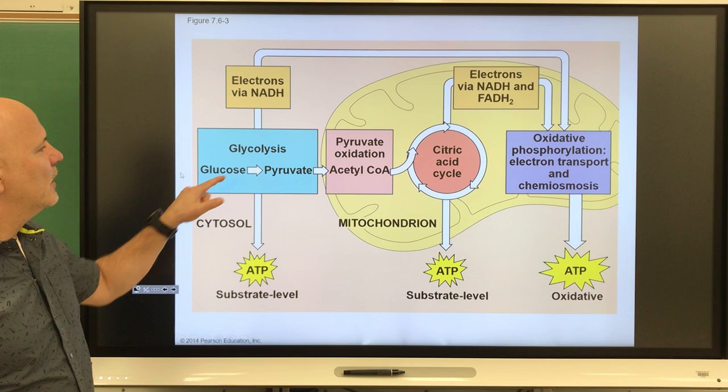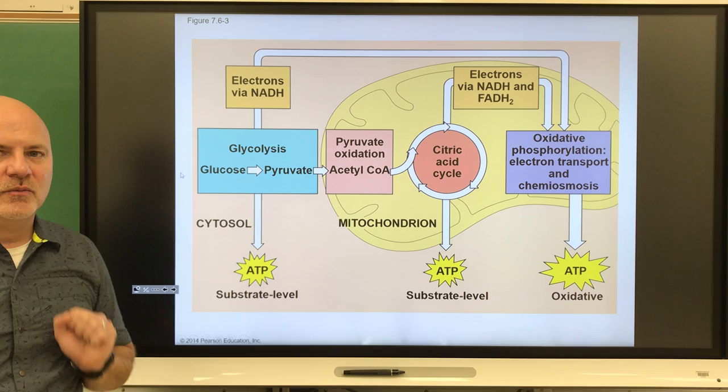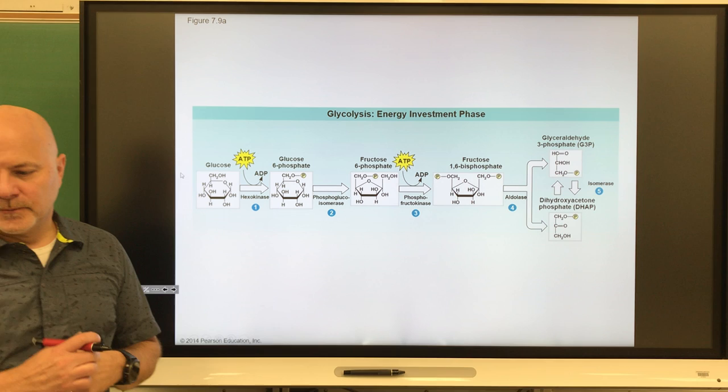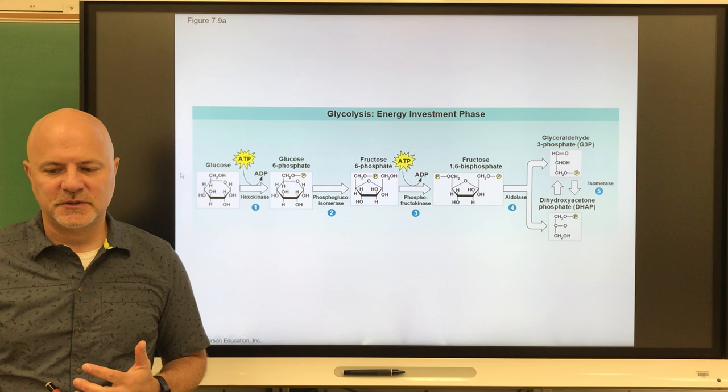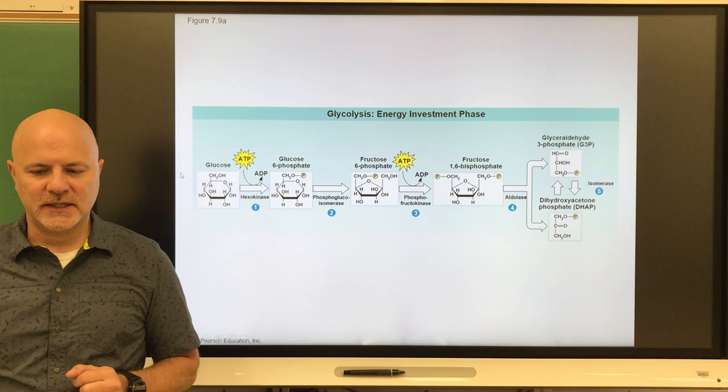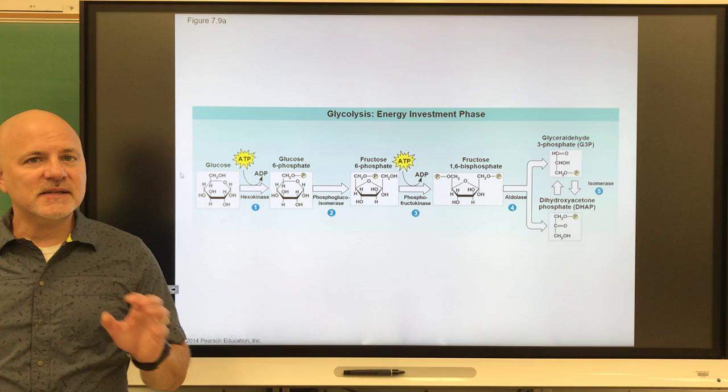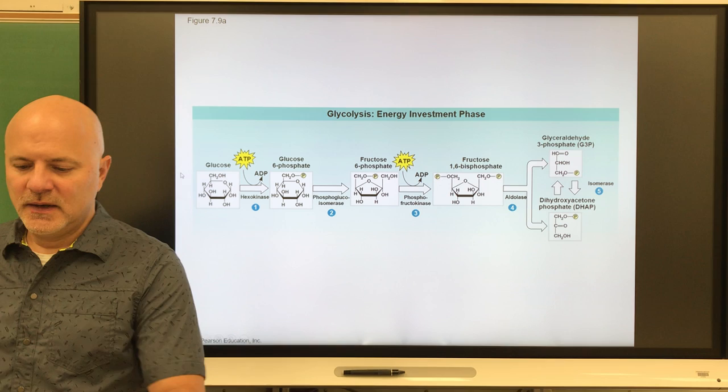The word glycolysis: glyco means sugar, lysis means to split — we're going to split a sugar. Glycolysis is a breakdown of glucose into two molecules of pyruvic acid, or pyruvate. This is the first step in both aerobic and anaerobic respiration. Anaerobic respiration occurs without oxygen; aerobic occurs with oxygen. Glycolysis is found in all organisms, does not require oxygen itself, and takes place in the cytoplasm.